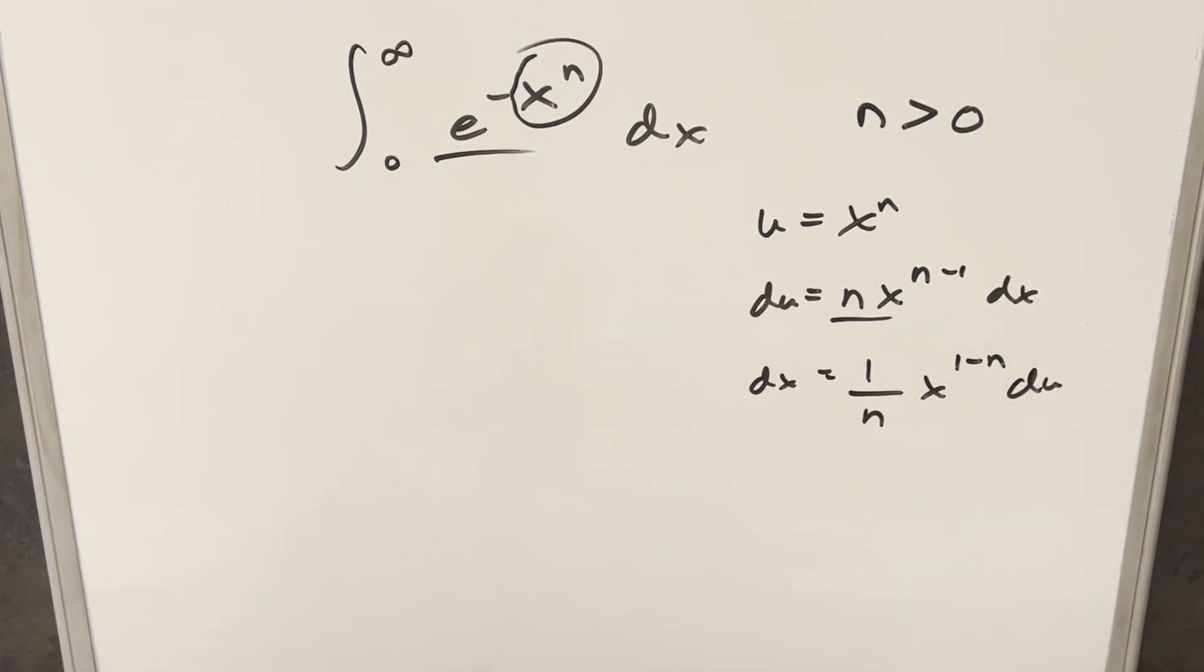Let's get this value in terms of u. Coming back here, if I take the 1 over n power on both sides, then x equals u^(1/n). Then I'll insert this here, so we're going to have 1 over n times u^((1-n)/n) du.